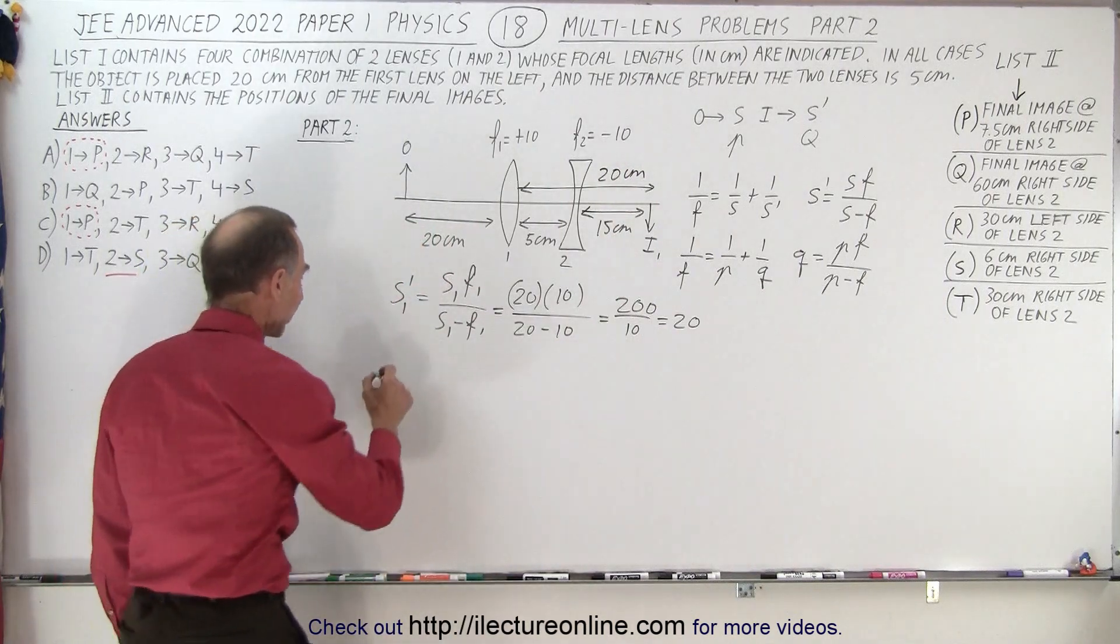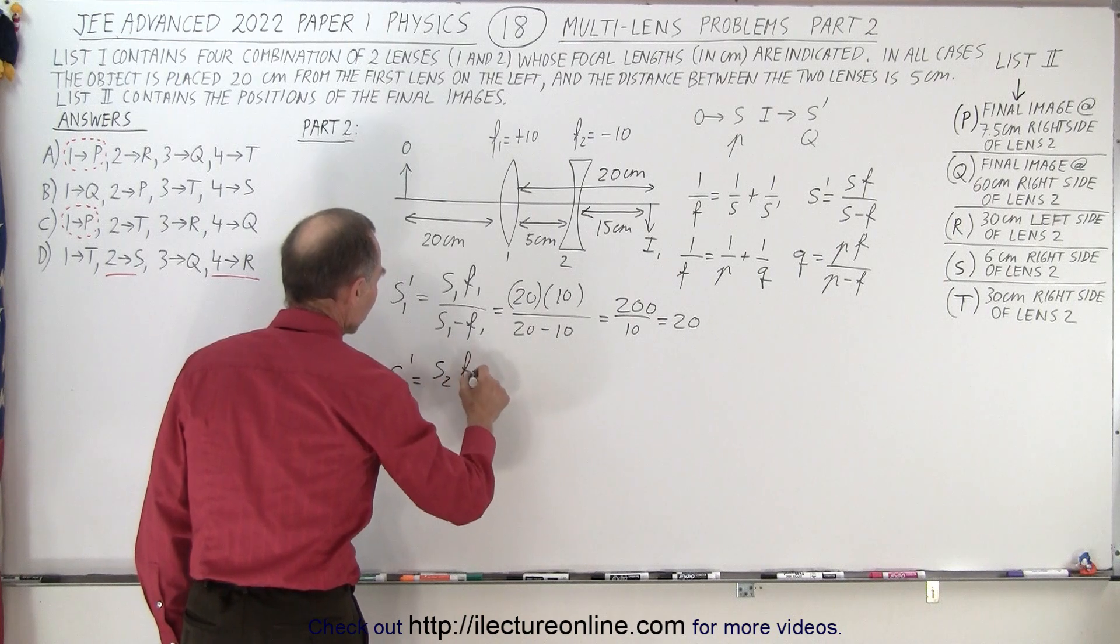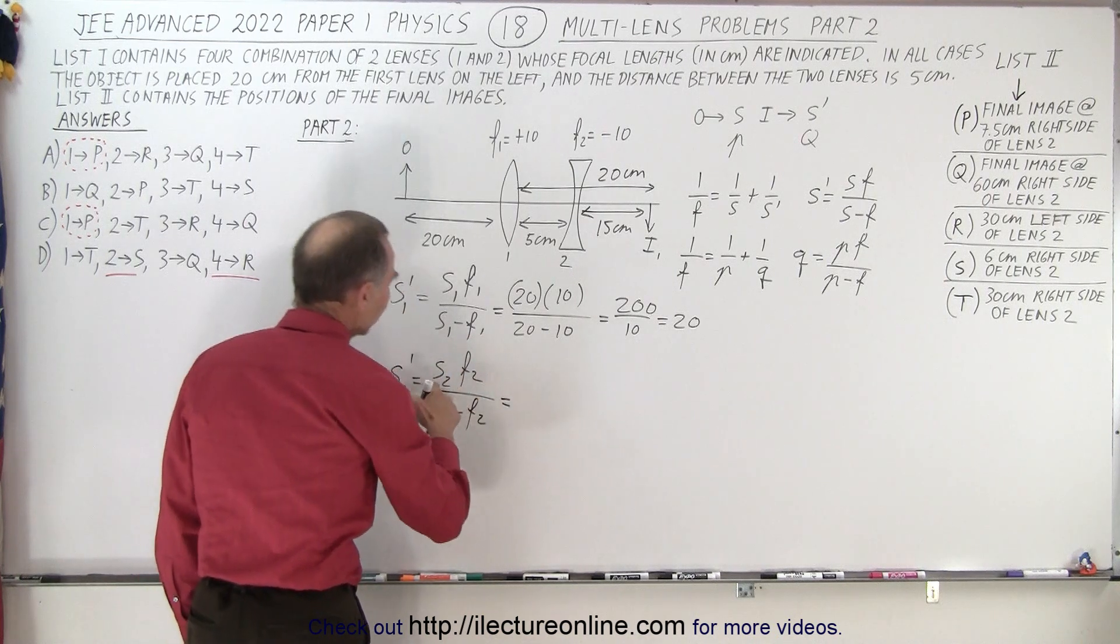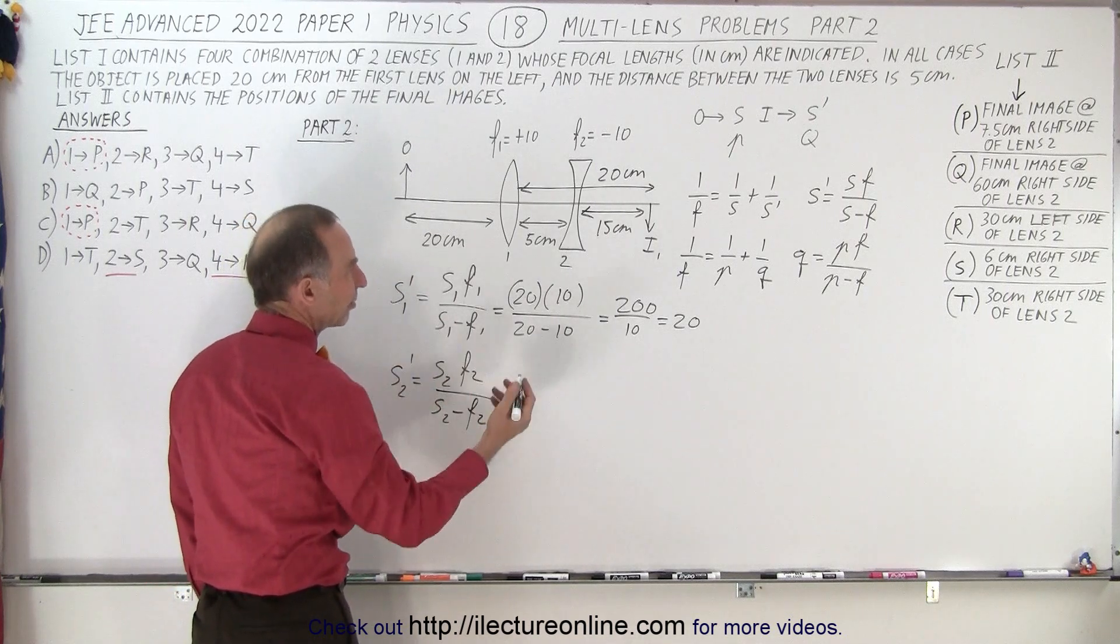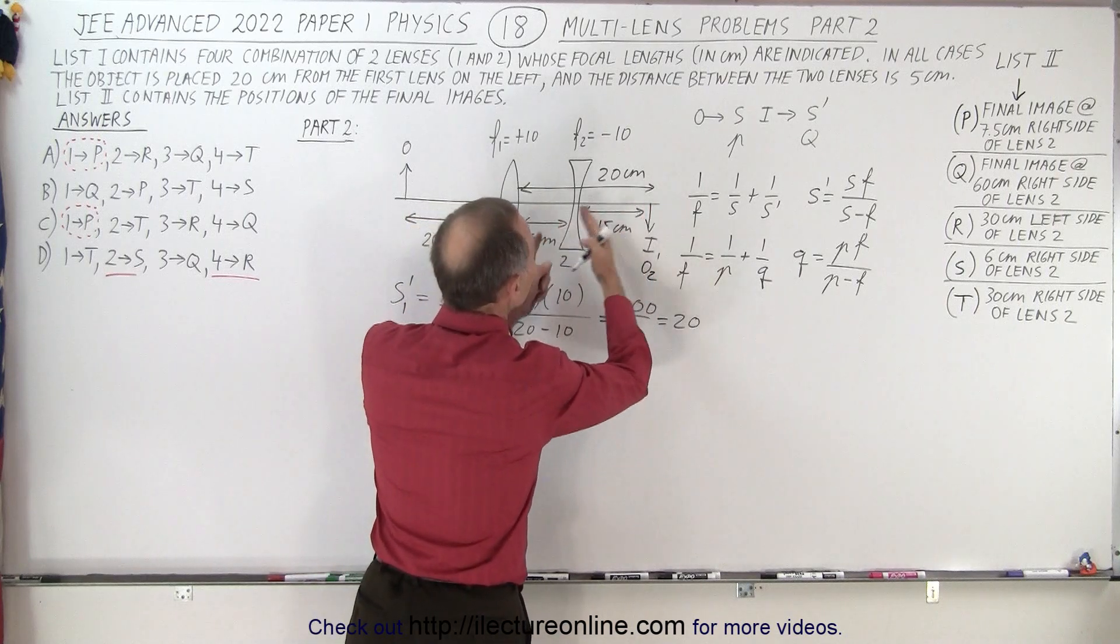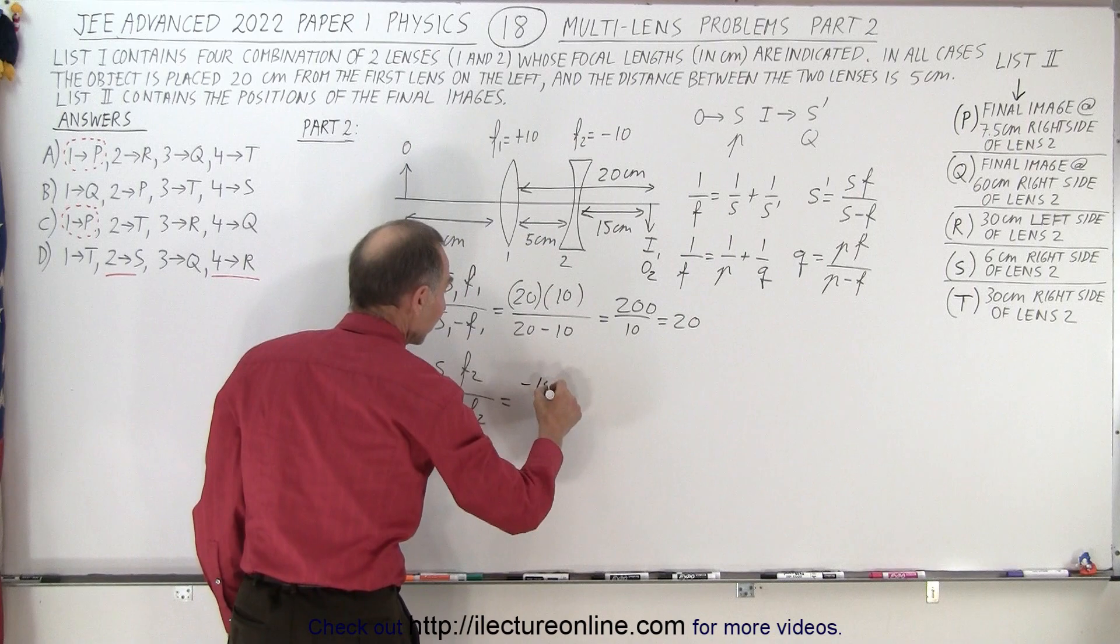So now we're ready to find the second image. S2 prime is equal to S2 F2 divided by S2 minus F2. And so S2 now is the object distance. So image 1 becomes object 2. That means we're 15 centimeters behind the second lens. That gives us a negative object distance minus 15.